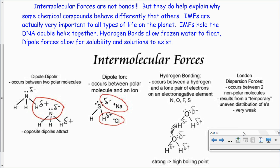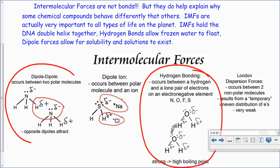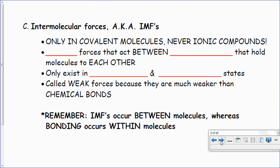Of the intermolecular forces we're going to be talking about, the most important is hydrogen bonding. Hydrogen bonding causes compounds to have high boiling points. Dipole-dipole occurs between two polar molecules — this is what causes things to be soluble or not soluble. London dispersion forces and the dipole-ion interaction we're not going to talk about too much; London dispersions are very weak and therefore not very important.